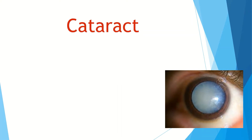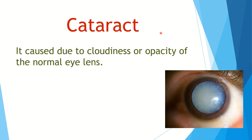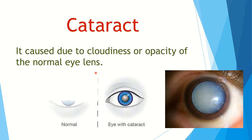Cataract: it happens due to the denaturing of proteins in the eye lens. You can see in this picture a comparison of a healthy eye and an eye with cataract.